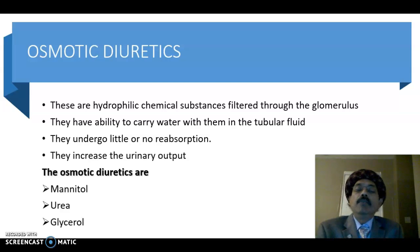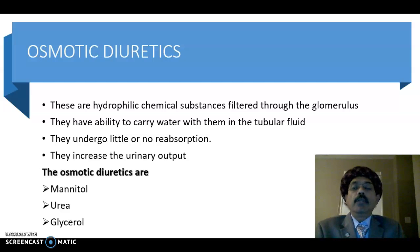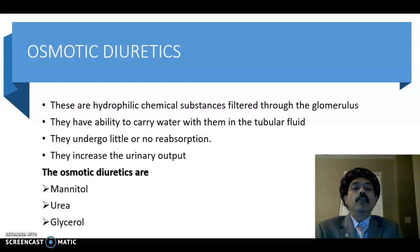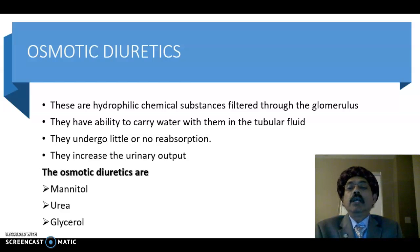Hello, my name is Dr. Diwan S. Raja. Today I will discuss the pharmacology of the osmotic diuretics. The osmotic diuretics are hydrophilic chemical substances — they like water. They are filtered through the glomerulus of the nephron, they have the ability to carry water with them in the tubular fluid, and they undergo little or no reabsorption, thereby increasing urinary output.